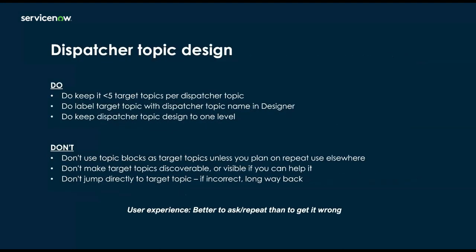Some do's and don'ts of dispatcher topics. You do want to try to keep it to less than five target topics per dispatcher topic — after five it can be difficult for admins to manage and test those topics. After five, you may want to think about whether that sixth target topic should just be search, to funnel those to a search engine rather than building out more and more target topics. You also want to label your target topics with the dispatcher topic name in VA Designer so you can find them easily.